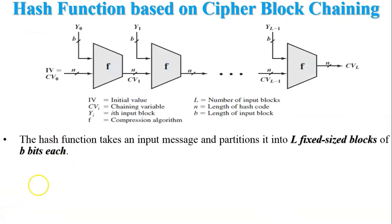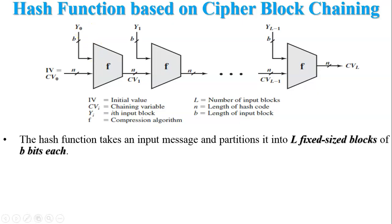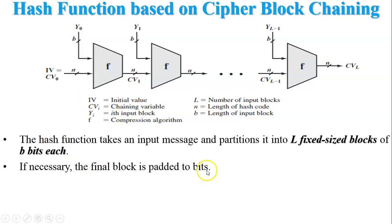Now let's discuss how hash functions work based on cipher block chaining. The hash function takes an input message and partitions it into l fixed-size blocks of b bits each. As shown in the figure, y0 through yl-1 are l fixed-size blocks of the message — for example, 128-bit or 64-bit blocks; here b bits is used in generalized form. If necessary, the final block is padded to b bits.